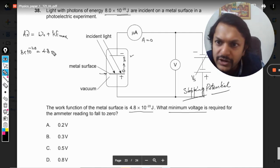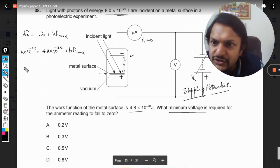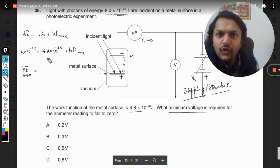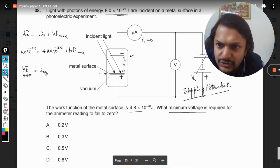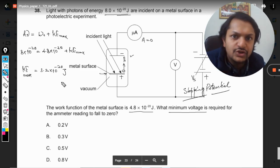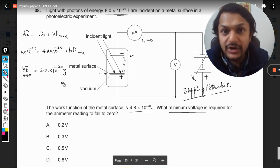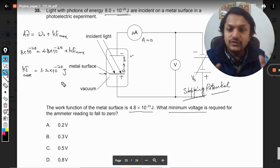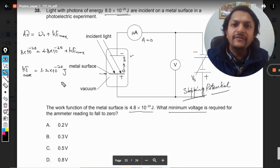And according to our question, this is 8×10^-20, and the work function is 4.8×10^-20 plus kinetic energy. From here, first of all, we are going to find the maximum kinetic energy, and that will be 8 minus 4.8, so that is 3.2×10^-20 joules.